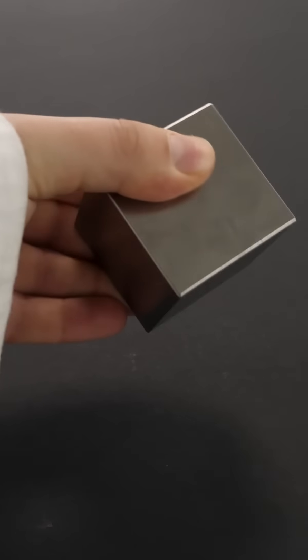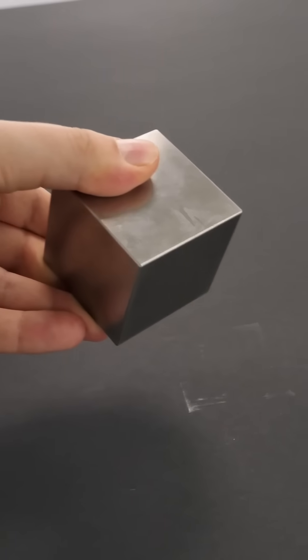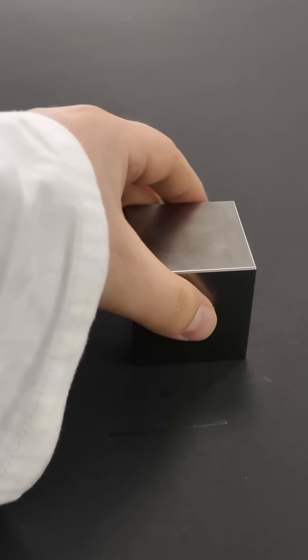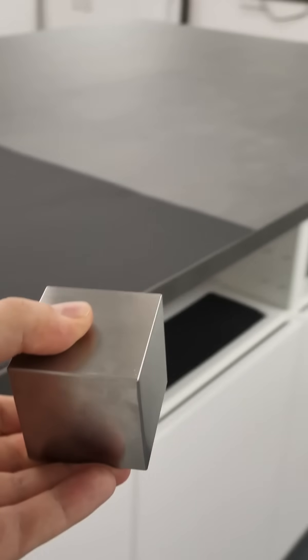Now this is a cube made of tungsten, one of the densest metals on earth. And even though it's exactly the same size as the magnesium cube, it weighs more than 11 times as much.